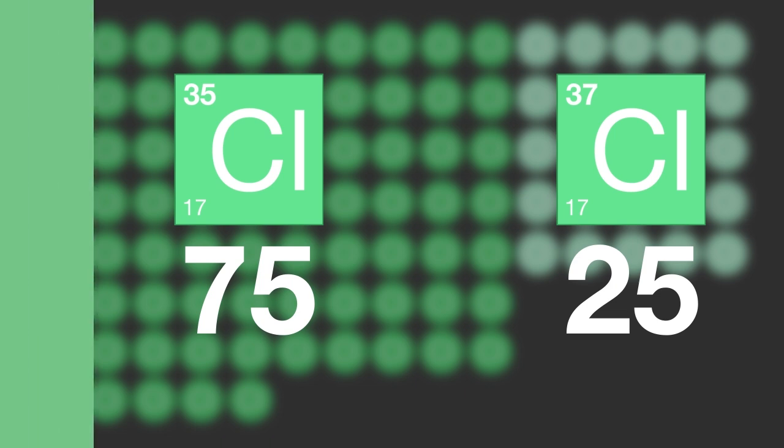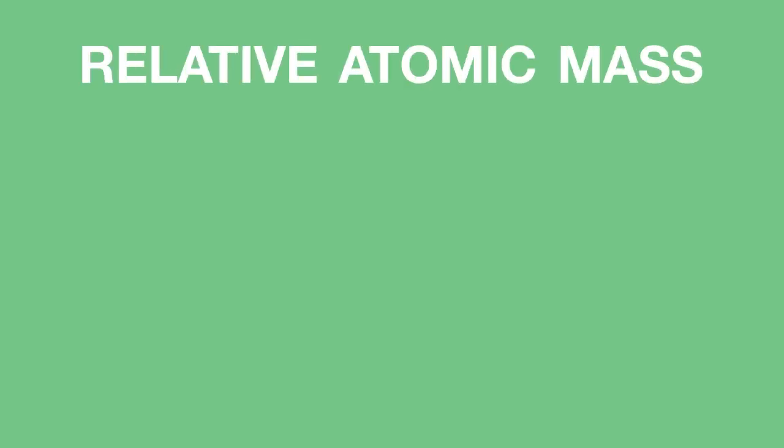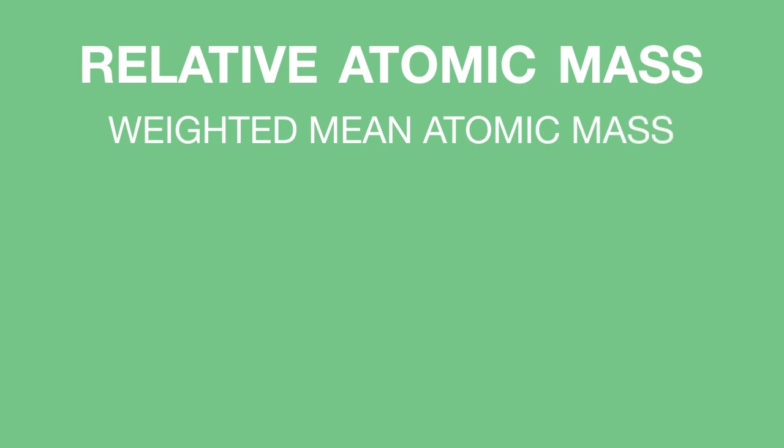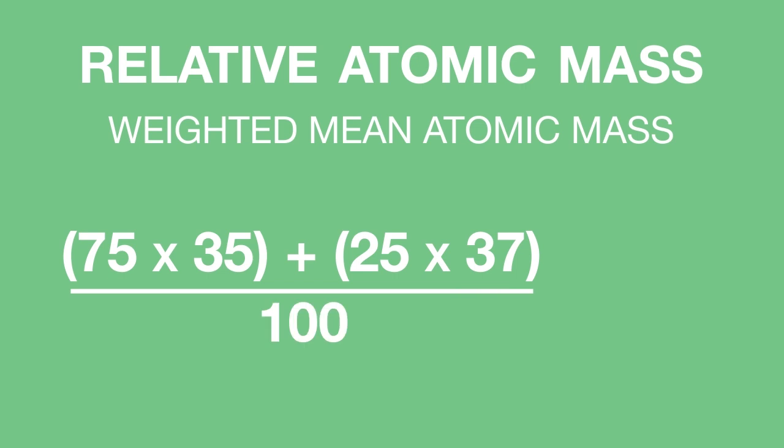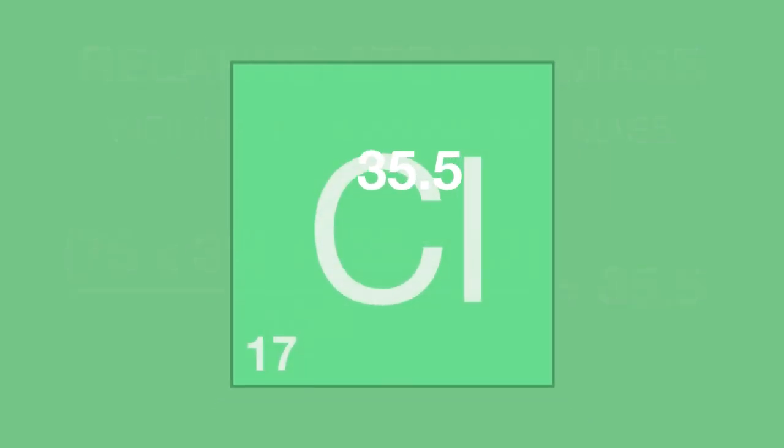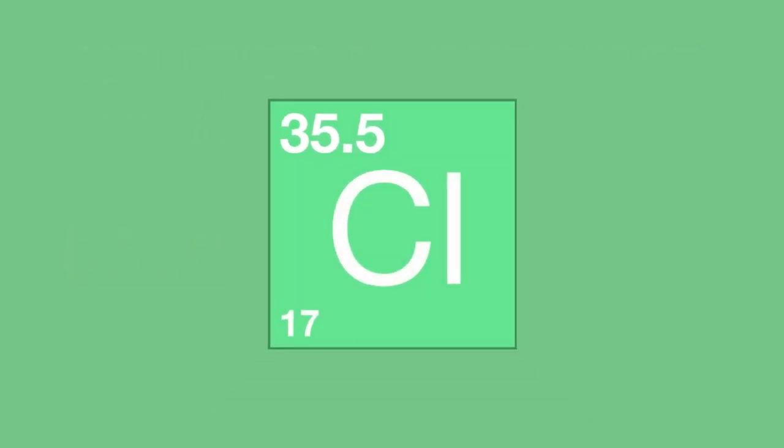Knowing this, we can work out the relative atomic mass, in other words, the weighted mean atomic mass. We can do this using a formula as follows: 75 times 35 plus 25 times 37, all divided by 100, equals 35.5. And this explains why chlorine is listed as having a relative atomic mass of 35.5 in the periodic table.